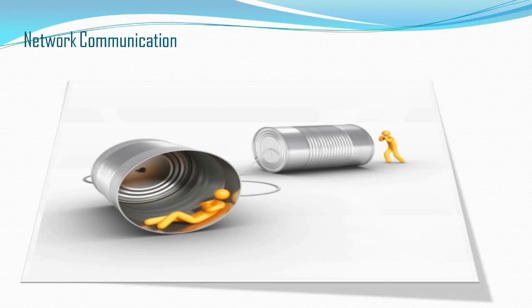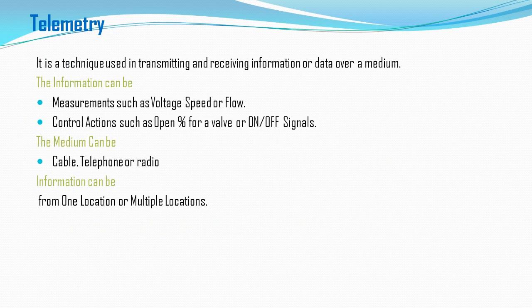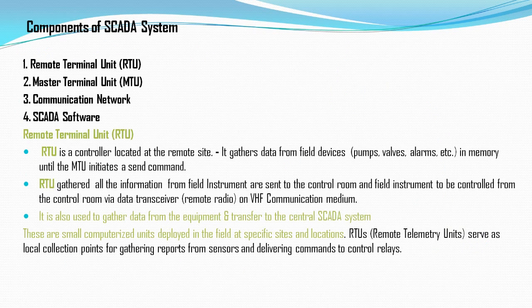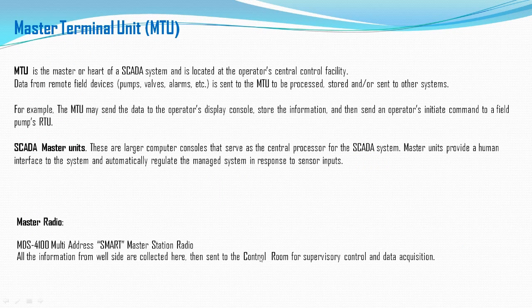The information coming from the RTU — which is the local gathering point at the remote site — goes to the master control room. Every site has an RTU, but the master control room, where the SCADA software resides, always contains an MTU. MTU stands for Master Terminal Unit and is the heart of the SCADA system, located at the operator's central control facility where all operator screens are present. Data from the remote sites is accessed through the MTU and processed there.